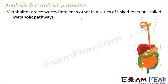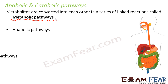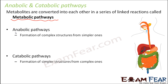Metabolites — which are nothing but biomolecules — are converted into each other in a series of linked reactions called metabolic pathways. These pathways are of two types: anabolic and catabolic. Anabolic pathways involve complex structures being formed from simpler ones — smaller substances together form a larger substance. Catabolic is just the opposite: a bigger structure gets broken down into smaller ones, and this is also known as catabolism.